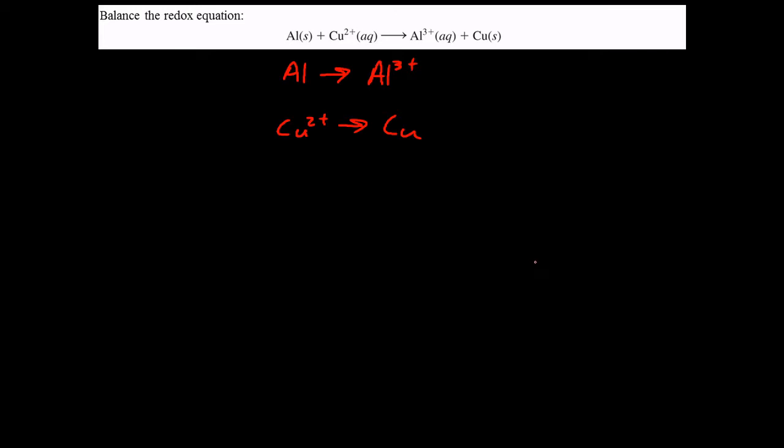The way I like to solve these is I like to go ahead and write the two half reactions out and then just add things to the two sides as I continue balancing. The first one here, the mass is already balanced. We have the correct number of aluminum on both sides.